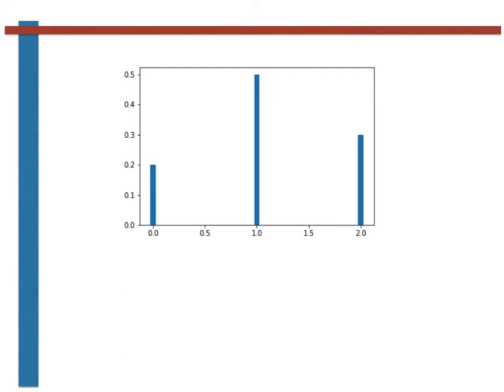To see how this works, consider the probability mass function for the multinomial distribution, where the random variable can take one of three different values, 0, 1 or 2, that is shown here.